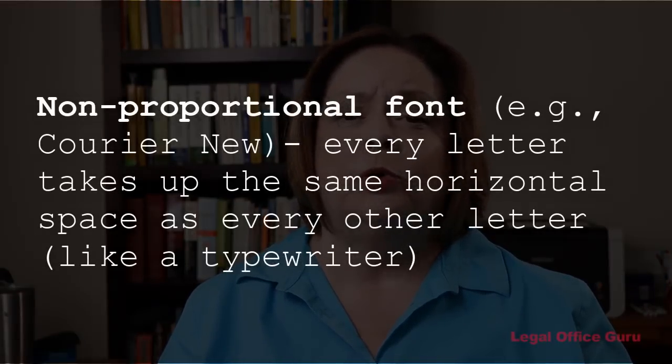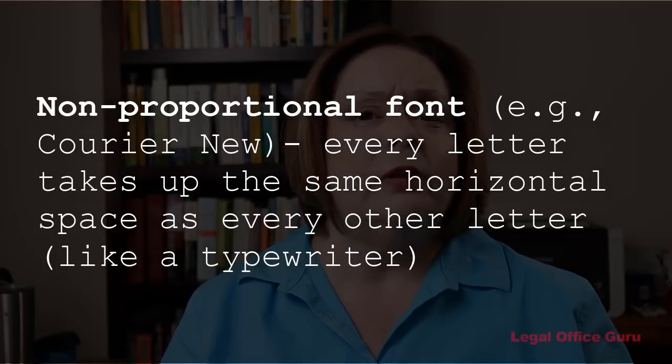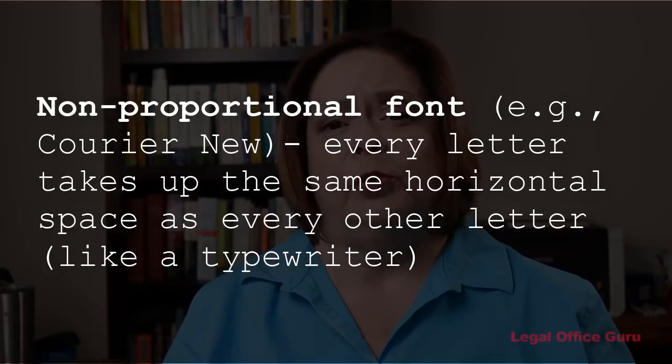Those of you who consider yourselves typography aficionados are probably cringing at the mention of Courier New — I mean, yuck, right? But there are actually a couple of good reasons for requiring that specific font. Since Alabama brief requirements for length are based on the number of pages rather than the number of words, they've deliberately chosen a non-proportional font like Courier New. A non-proportional font is a typeface in which every character takes up exactly the same amount of horizontal space. Requiring a specific non-proportional font in a given type size ensures that one 30-page brief contains roughly the same number of words as another.